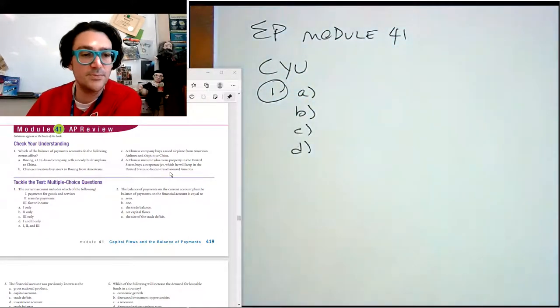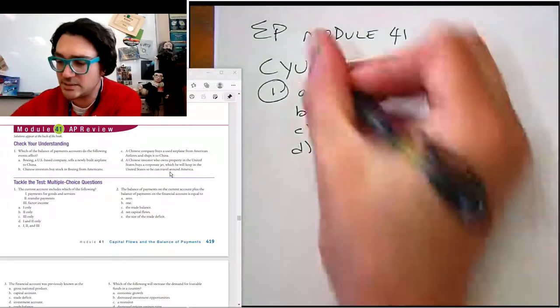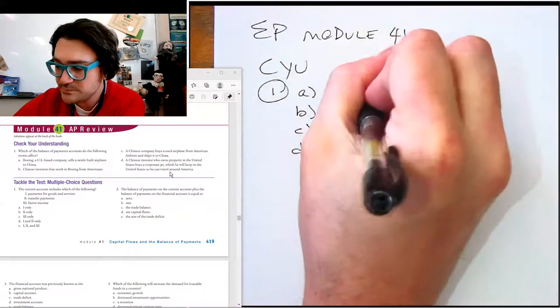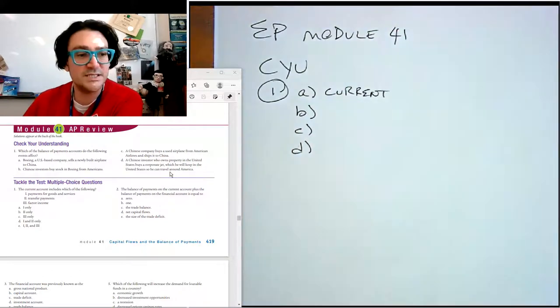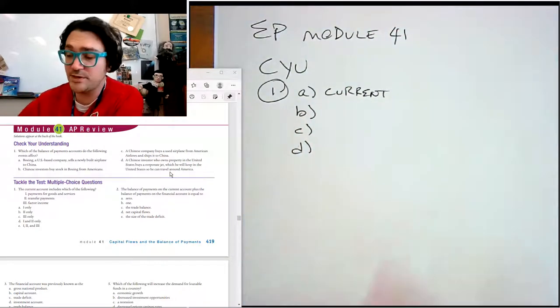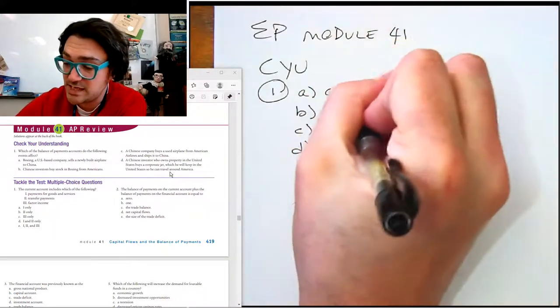A says Boeing, a U.S.-based company, sells an airplane to China. That's the current account because it's a good. B says the Chinese investors buy stock in Boeing from Americans. That's the financial account because it's a stock.